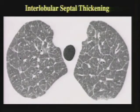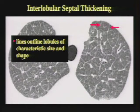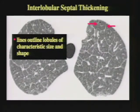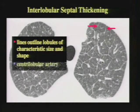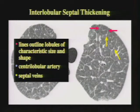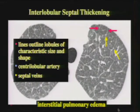The first abnormal finding you should look for is interlobular septal thickening. It results in a reticular abnormality, and you can tell the lines represent thickened interlobular septa because they outline secondary pulmonary lobules based on their characteristic size and shape. Here is a very nice secondary pulmonary lobule in the lung periphery, marginated by interlobular septa, about two centimeters in diameter, with the central lobular artery visible in its center. This happens to be a patient with interstitial pulmonary edema, a common cause of interlobular septal thickening.